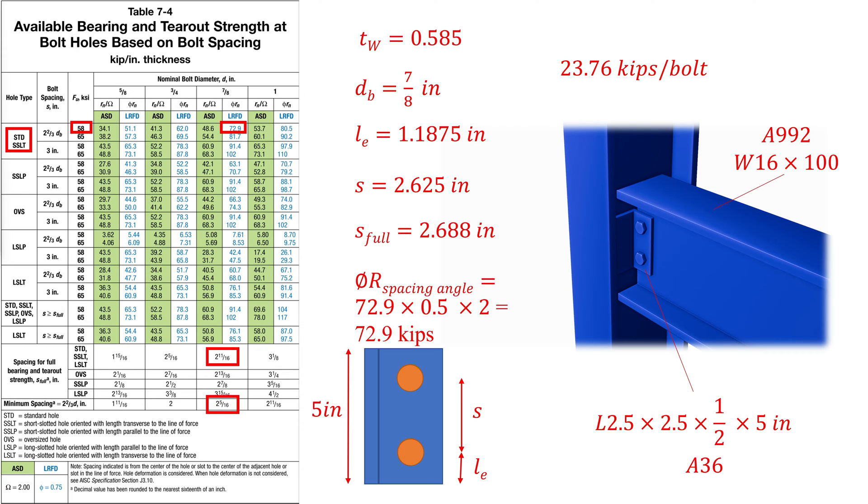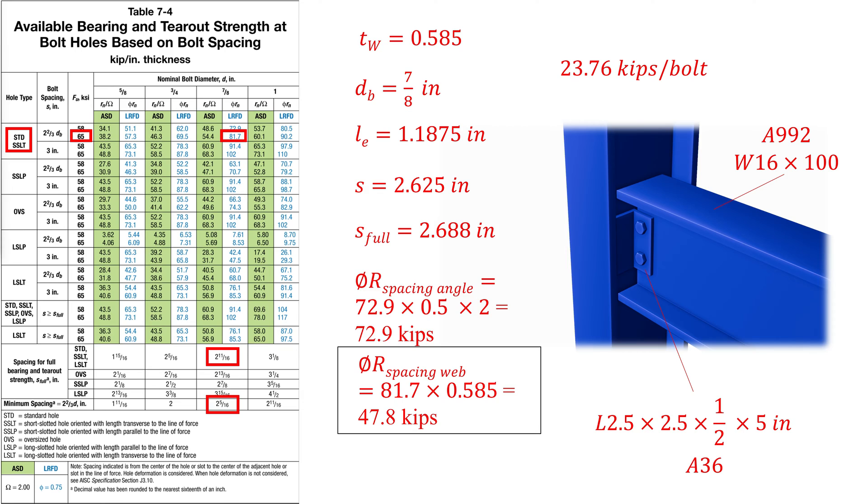The strength of the web should also be checked, but the web has a different material than the angle with an ultimate strength of 65 ksi. And thus, the strength of the web is 81.7 kips per inch multiplied by the thickness of the web 0.585, which gives a strength of 47.8 kips. The web is weaker than the angles and thus it governs.